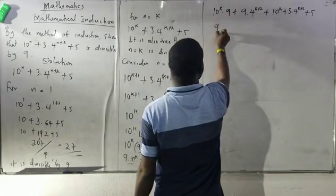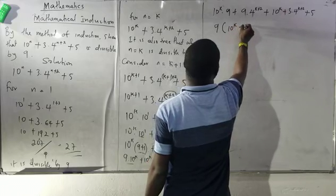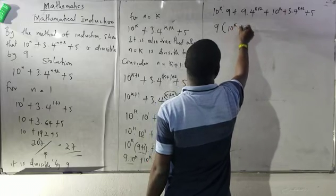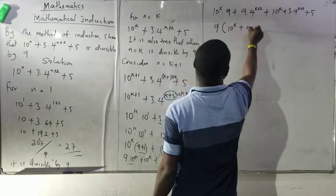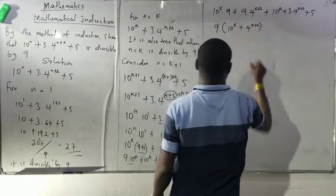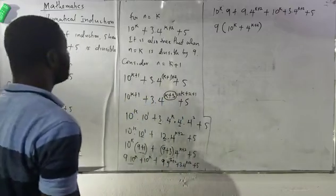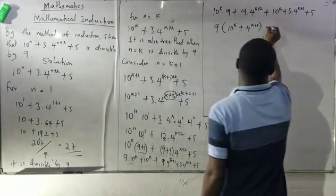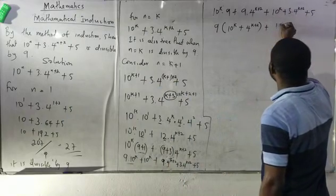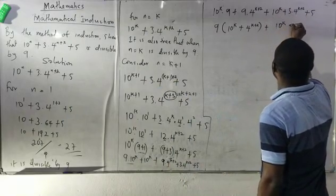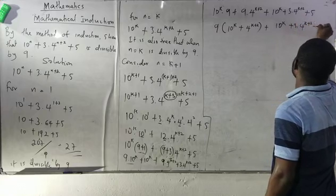There is something common here. I can factor out 9 from the first two terms: 9 bracket of 10^k plus 4^(k+2), plus 10^k plus 3 dot 4^(k+2) plus 5.